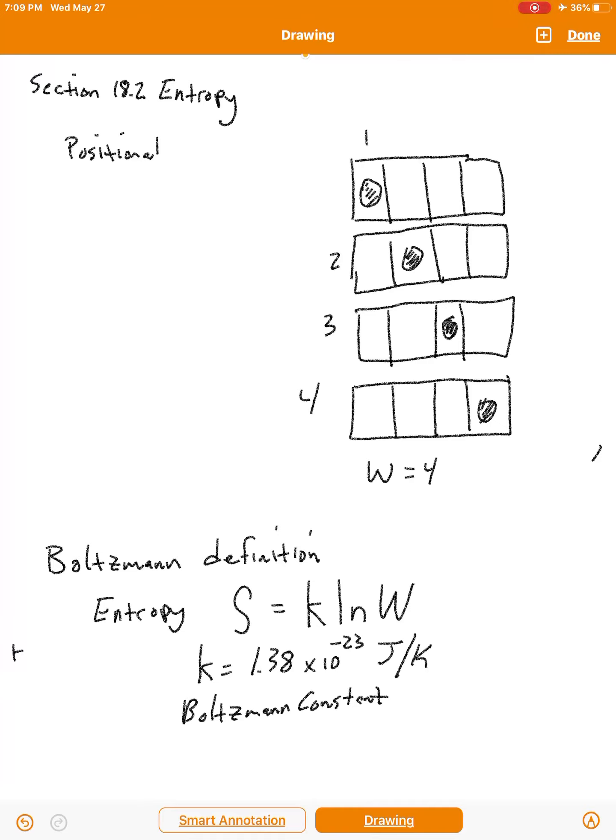Now when we look at actual real samples, real situations, the numbers are much larger. So for example if we have a mole of atoms confined to some volume. So a mole is Avogadro's number. That's a very large number. So that's a more realistic situation in chemistry is that we have these large numbers. So the number of possible positions or arrangements could end up being very very large.